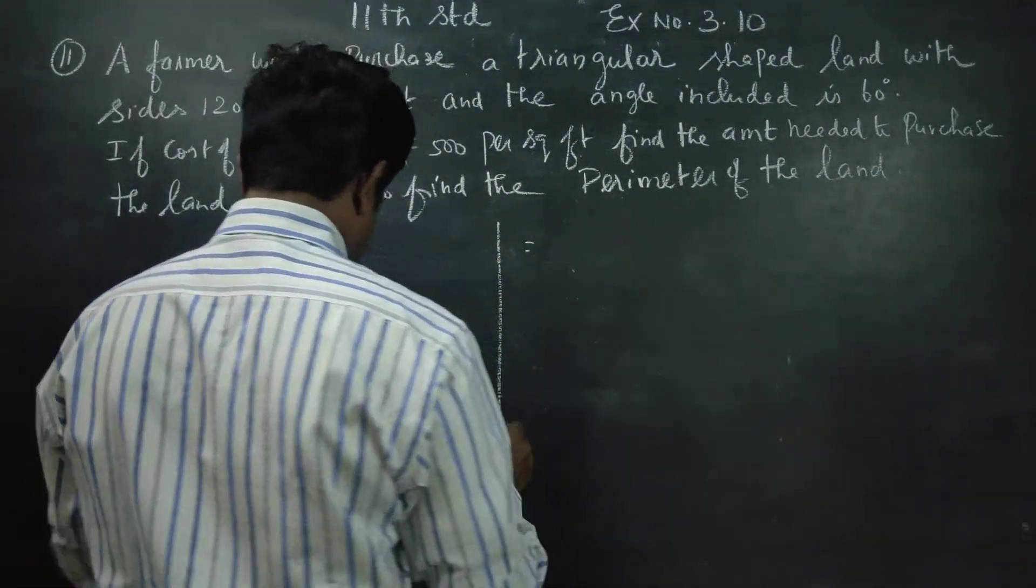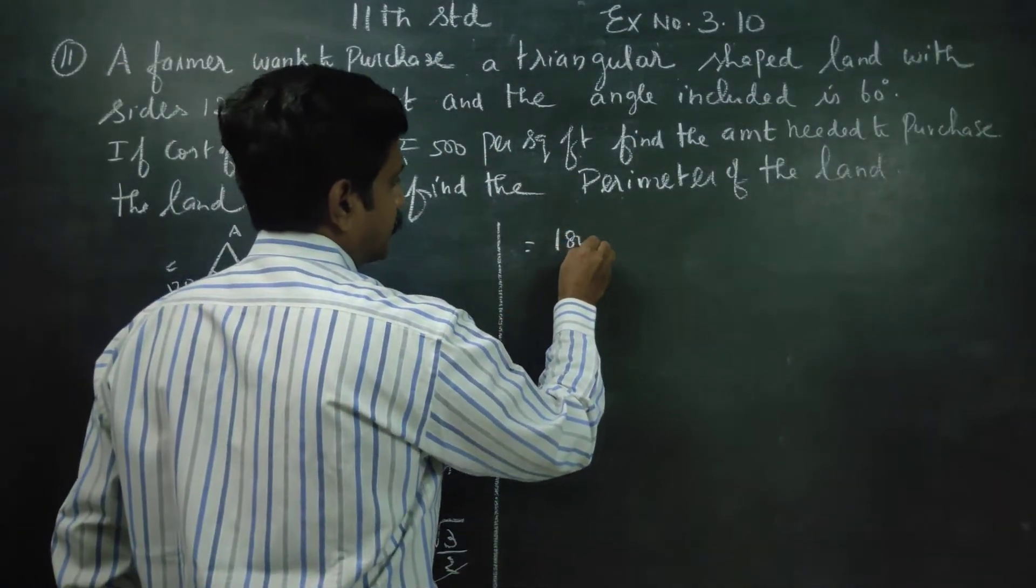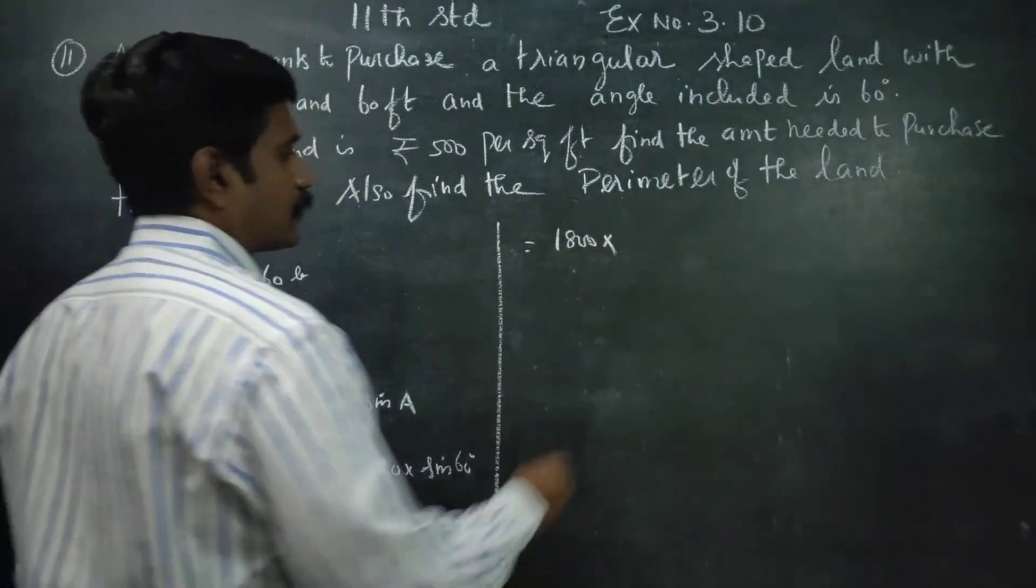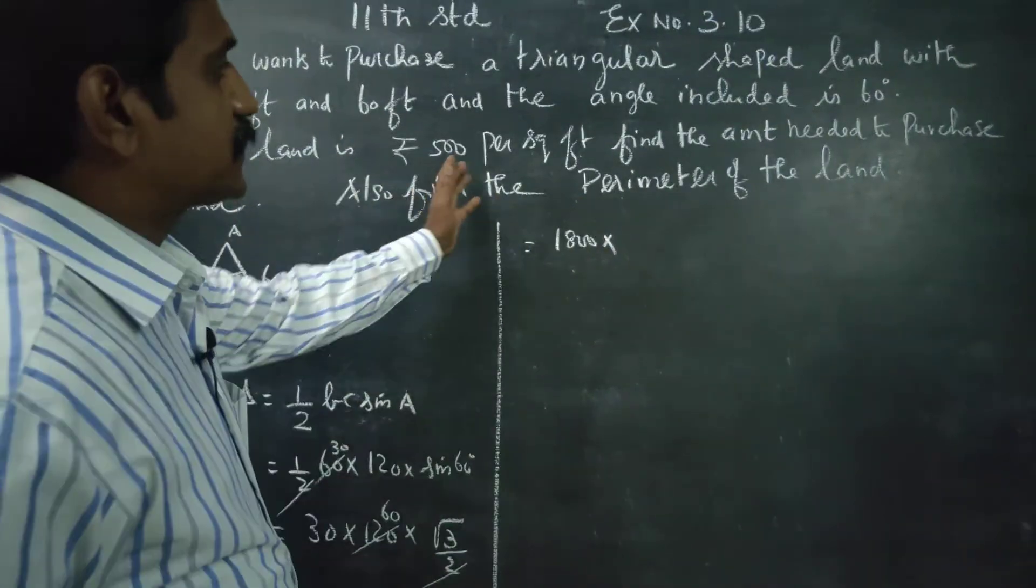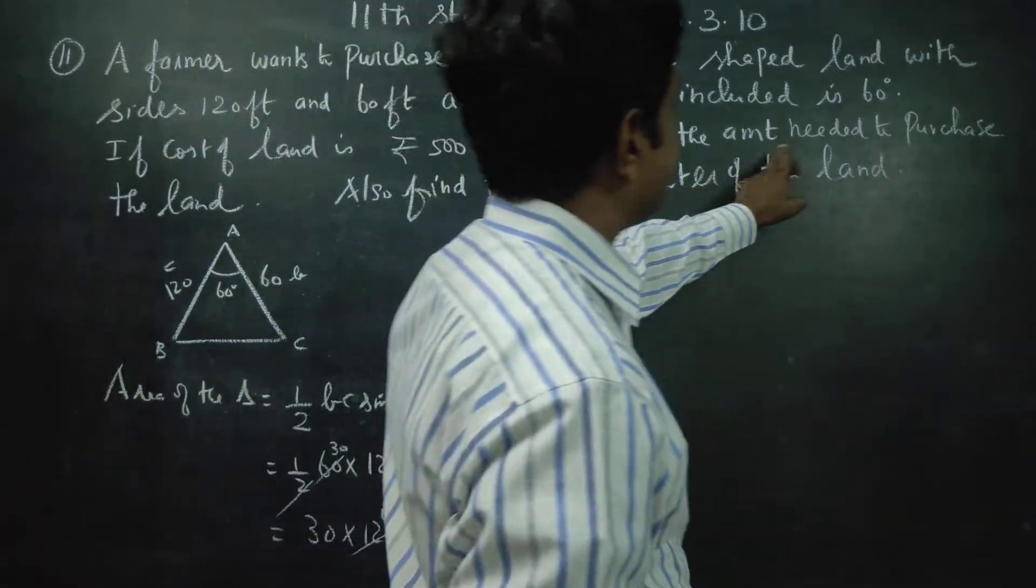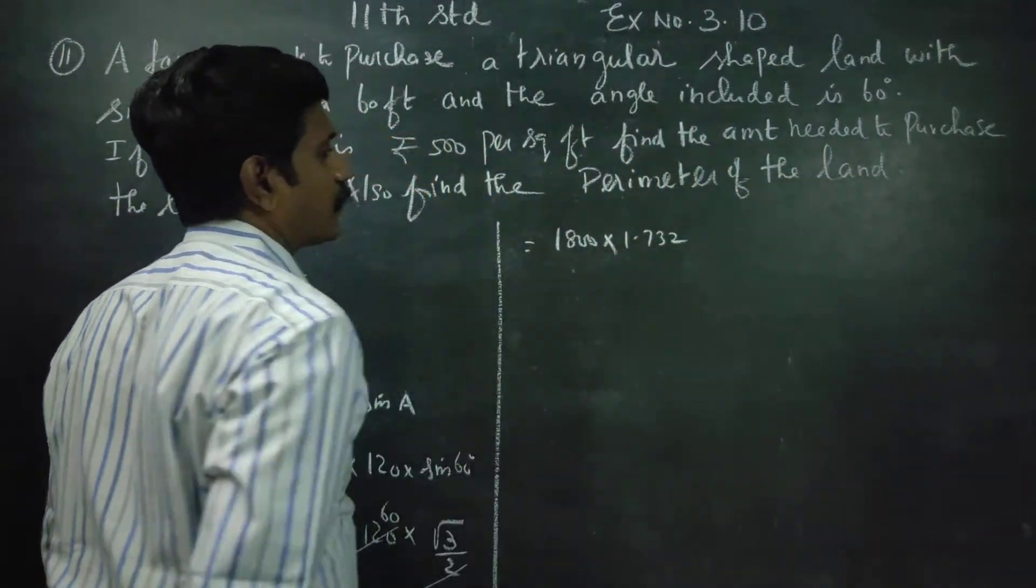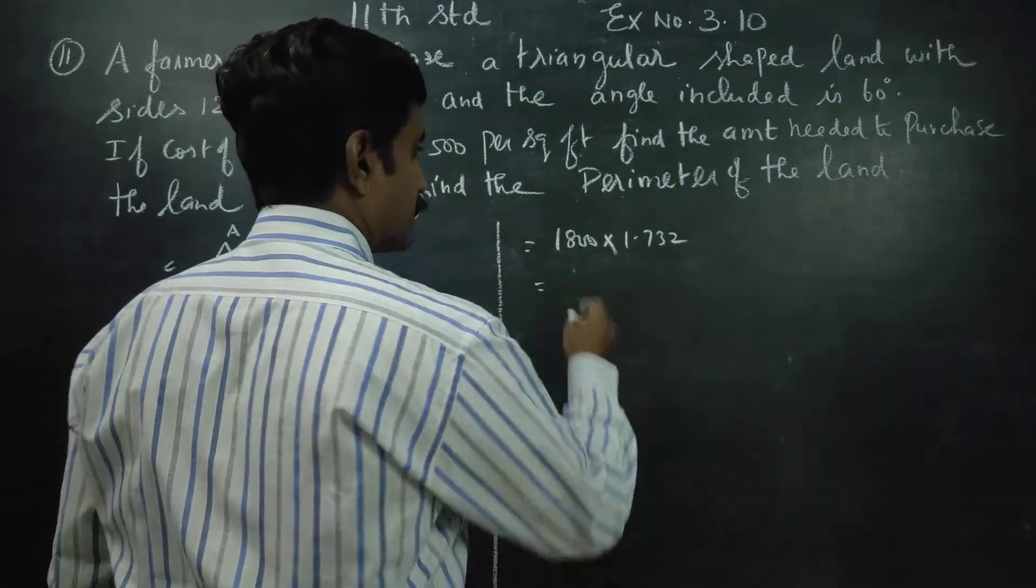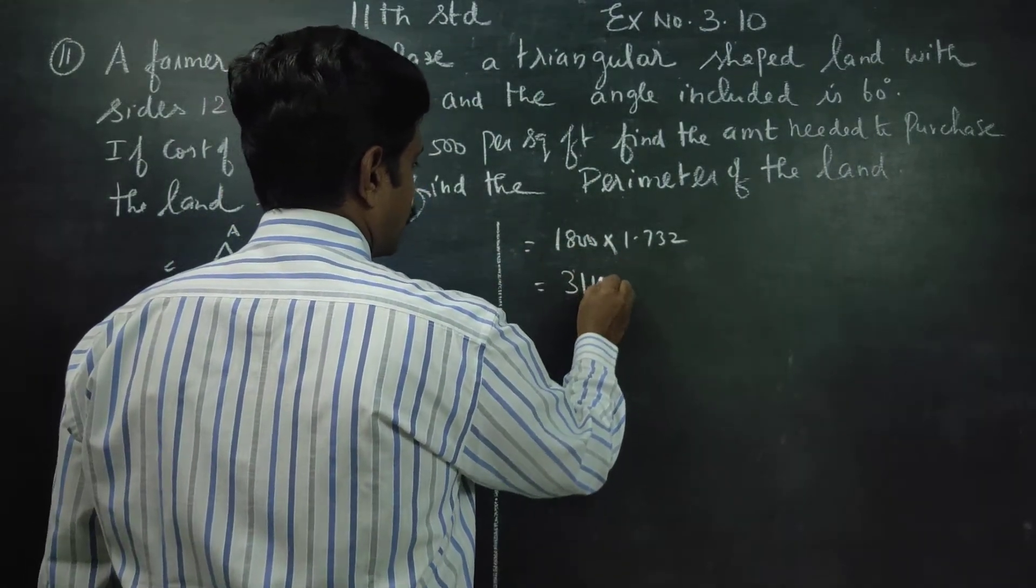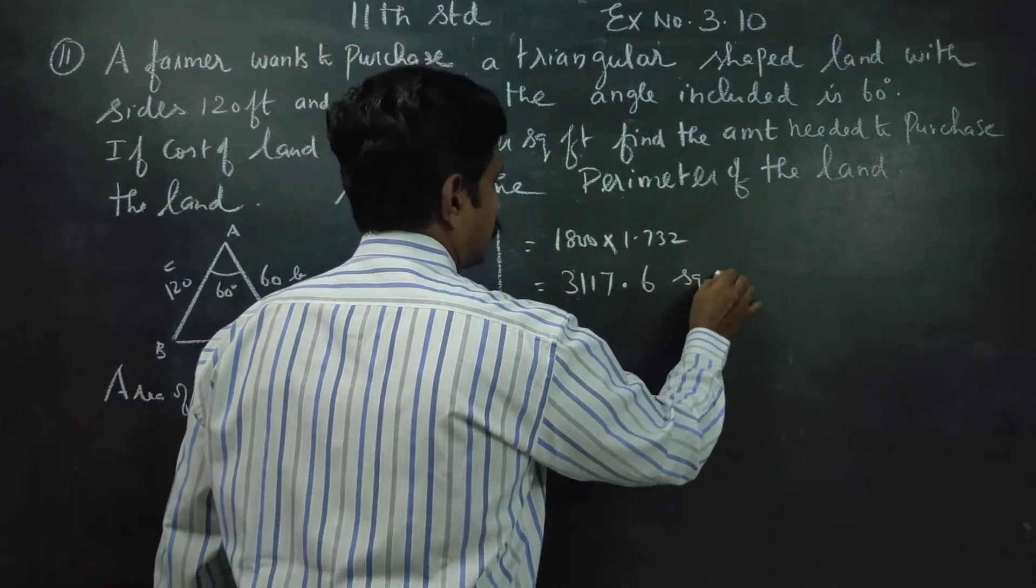If you multiply this, 30 into 60 is 1800 into root 3 value. Cost will be given. That's why $500 per square foot. That's why you need root 3 value: 1.732. 1800 into 1.732, you will be getting 3117.6 square feet.